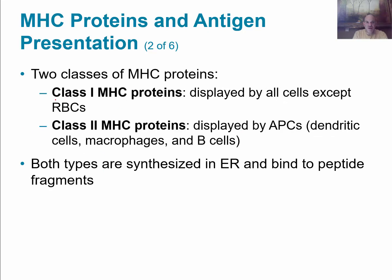There are going to be two classes of these major histocompatibility proteins. The class 1 MHC proteins are going to be displayed on all of your body's cells, with the exception of the red blood cells — those will not have that. And then there's the class 2 MHC proteins, and those are displayed by antigen-presenting cells like dendritic cells, macrophages, and even B-cells.